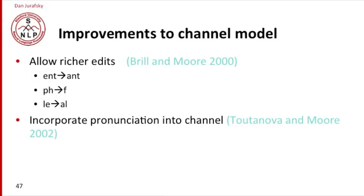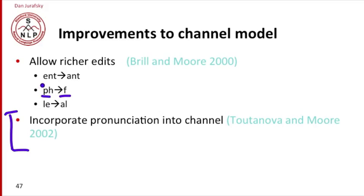Modern models of the channel, in the last decade or so, allow a number of improvements. Incorporating a pronunciation component into the channel model is one. We might also want to allow richer edits — not just single letter edits, but edits like pH being incorrectly typed as F, or the sequence ENT being very likely mistyped as ANT. These are a couple of improvements that a state of the art system might have in the channel model.